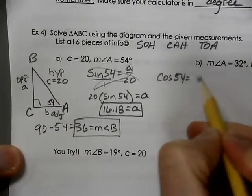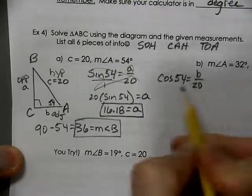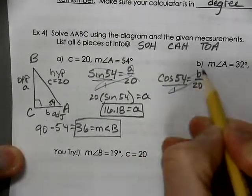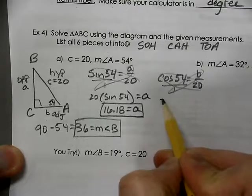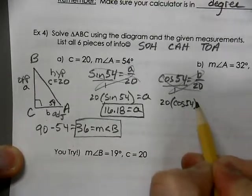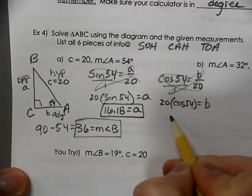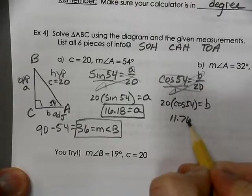Cosine of 54 equals the adjacent over the hypotenuse. Cross multiply, and we get 20 times the cosine of 54 equals B. And with our graphing calculator, we should be getting 11.76.